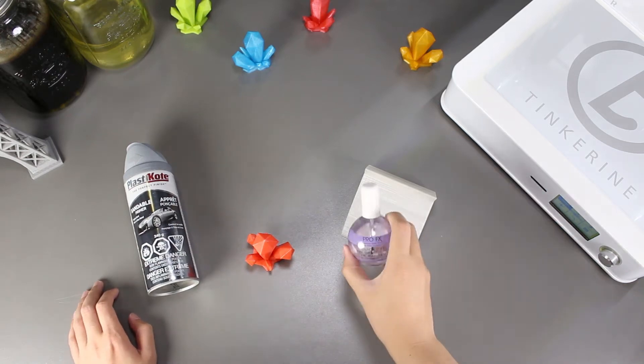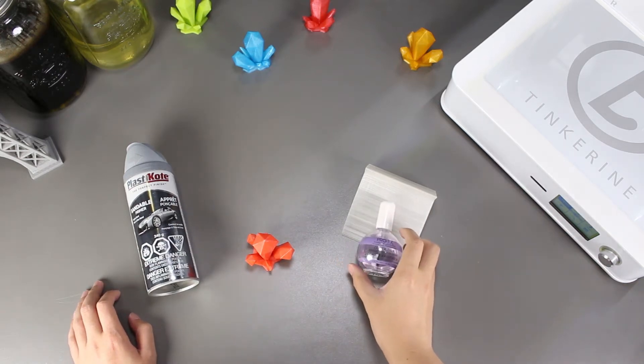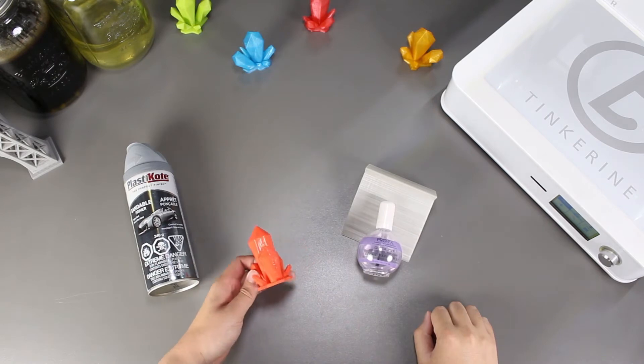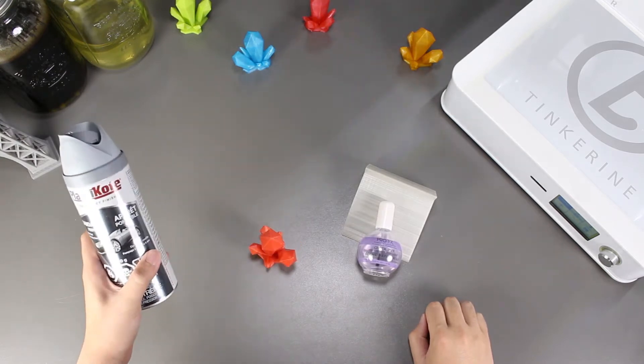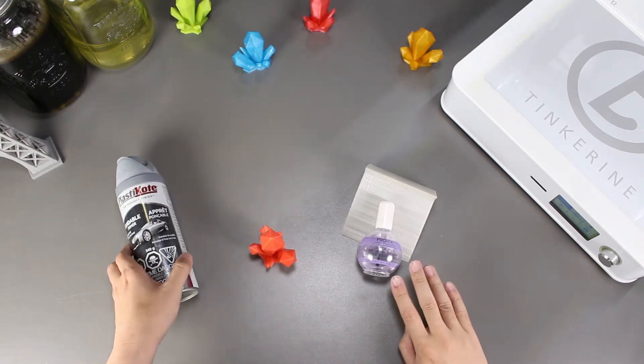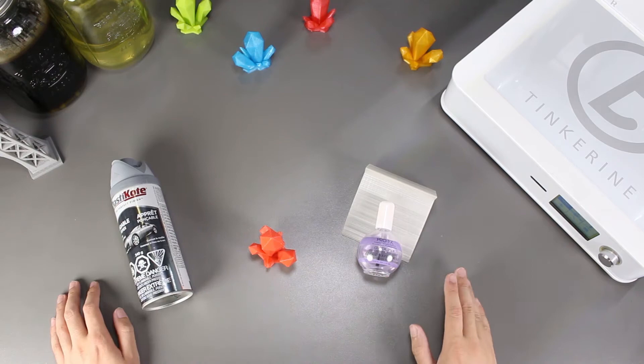Welcome to another episode of Tinkering Experiments. This episode is actually a continuation to the last episode. We are going to use the print that we post-processed last time with nail polish top coat and spray a coat of primer on it.